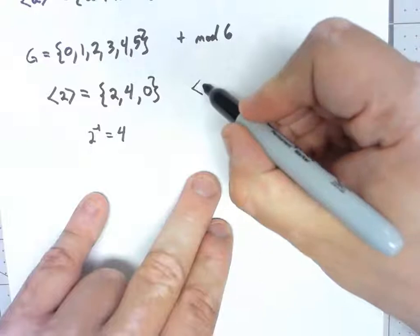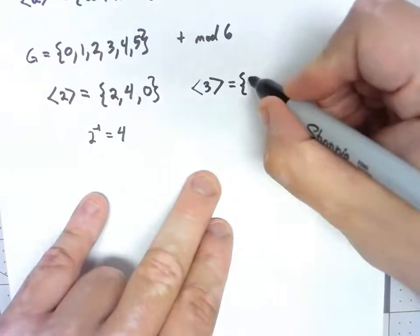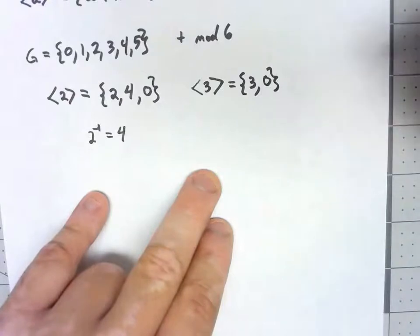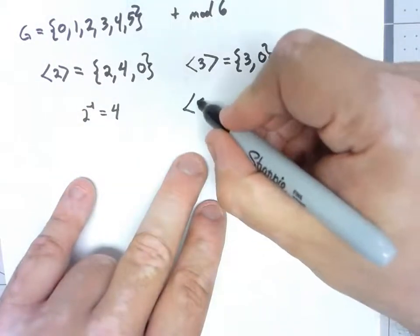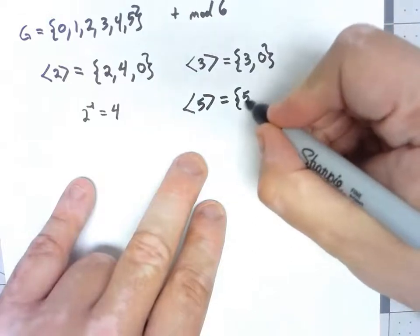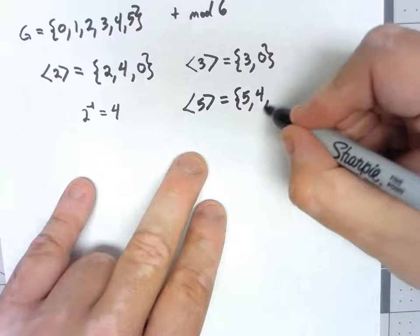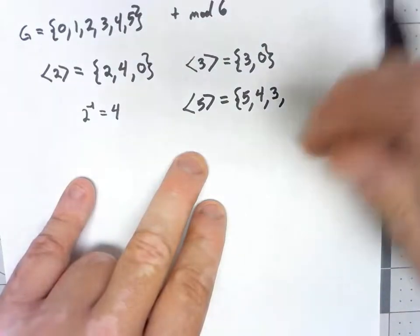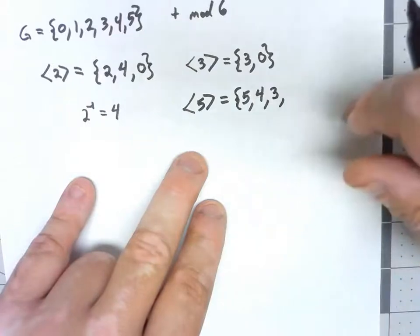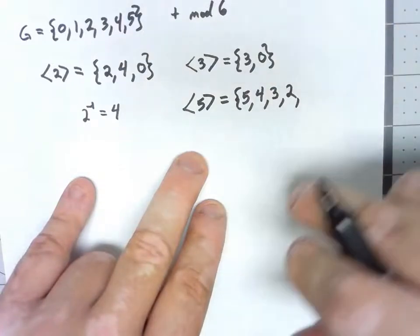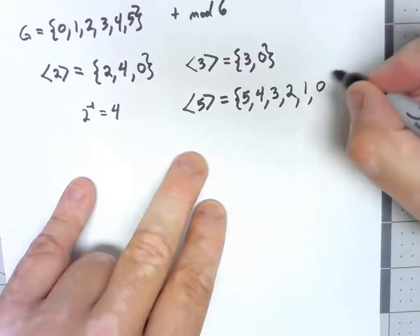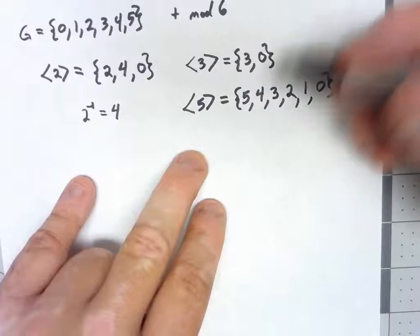What if I try generating with 3? It has to have 3. 3 squared is 3 plus 3, which is 6, giving us 0. No matter what else you do, you always get either 3 or 0. What about 5? You have to have 5. 5 plus 5 is 10, mod 6 is 4. 5 to the third, 5 plus 5 plus 5 is 15, mod 6 is 3. 5 to the fourth is 20, mod 6 is 2. 5 to the fifth is 25, mod 6 is 1. 5 to the sixth is 30, mod 6 is 0. At that point we actually have everything in the group.